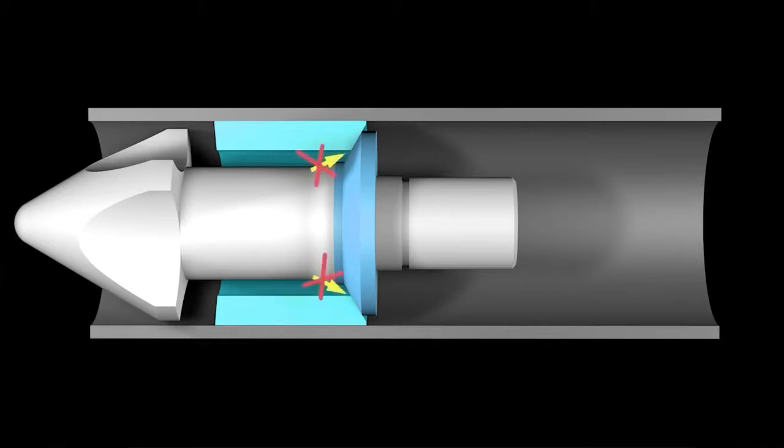The plastic cannot flow backwards because when the screw pushes forward, a check ring is shoved against a thrust ring to block the backwards movement of the molten plastic. This forces the plastic into the mold.